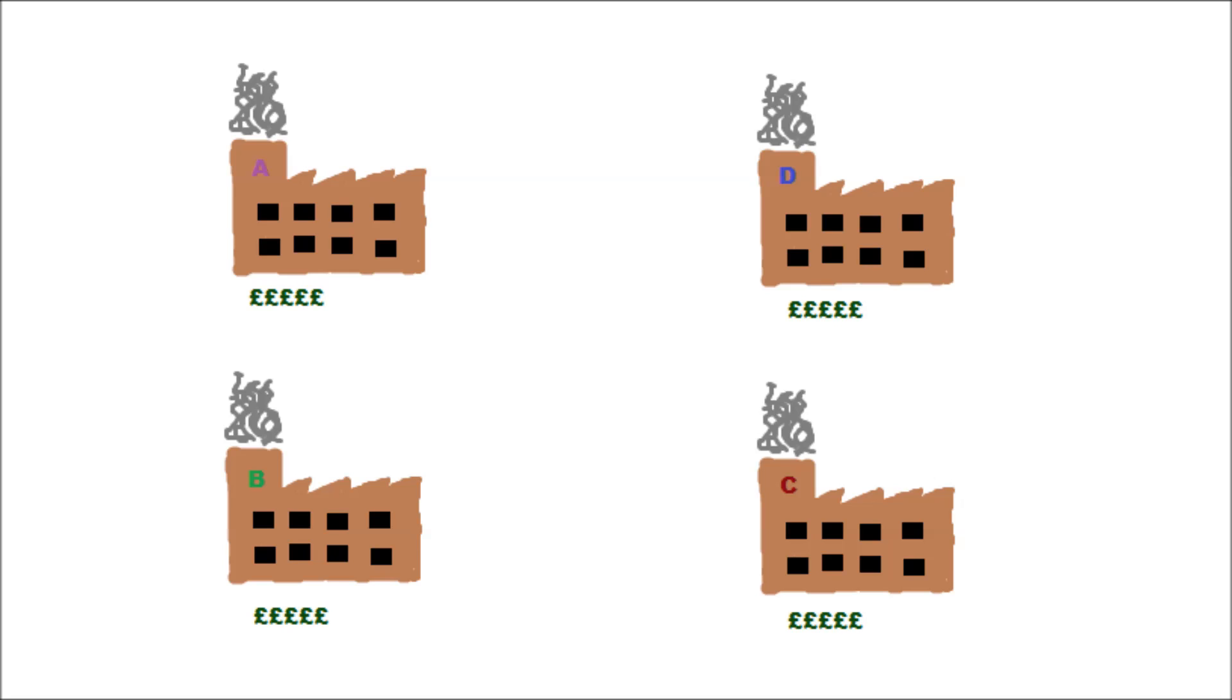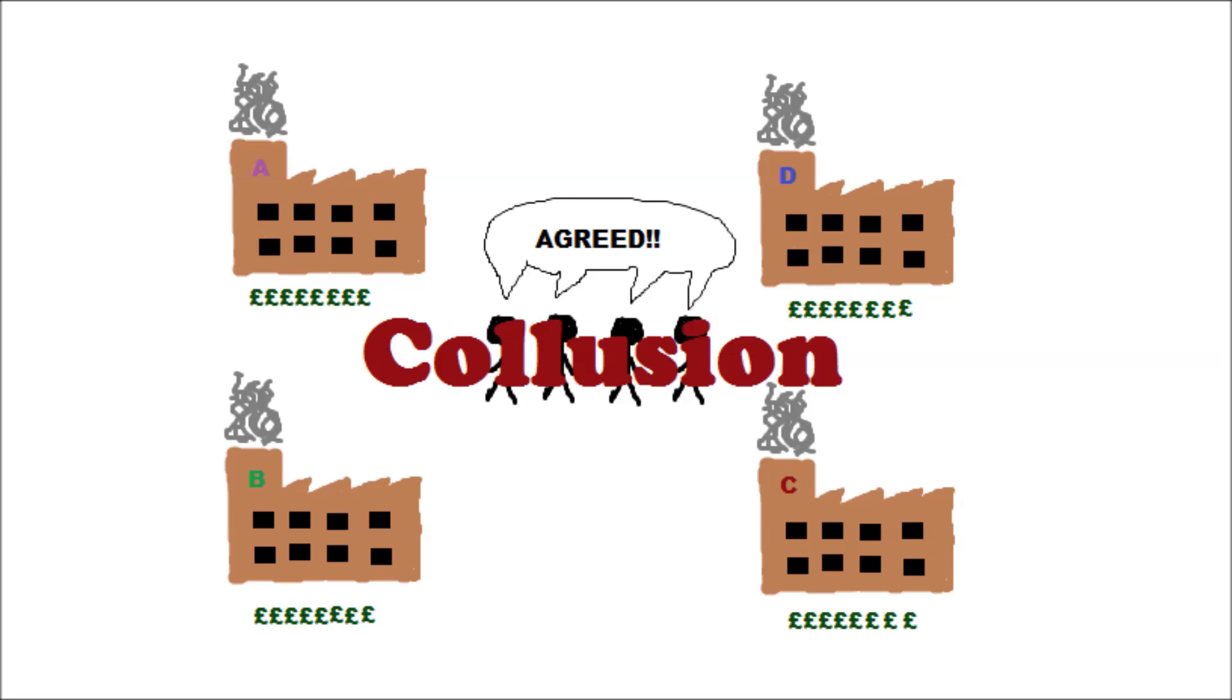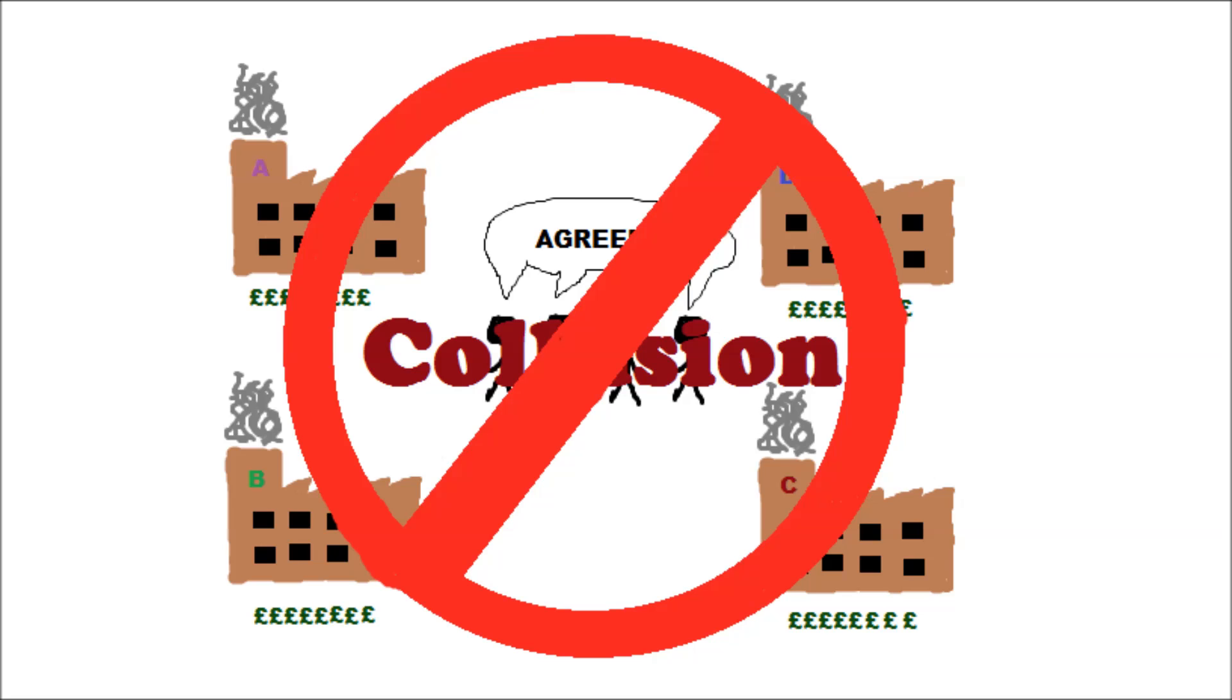Companies in an oligopoly don't like price wars, as they want to earn as much money as possible. This could lead to the companies arranging a meeting and deciding that all of them would raise their prices together. This is called collusion, and although it's largely illegal around the world, it can still happen.